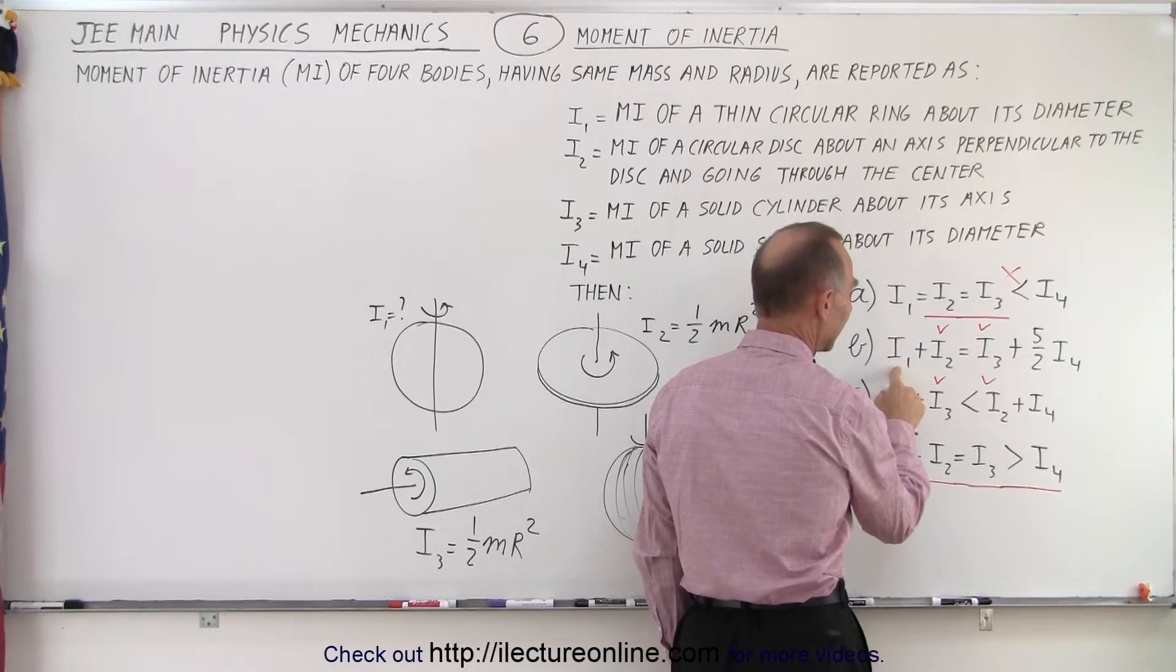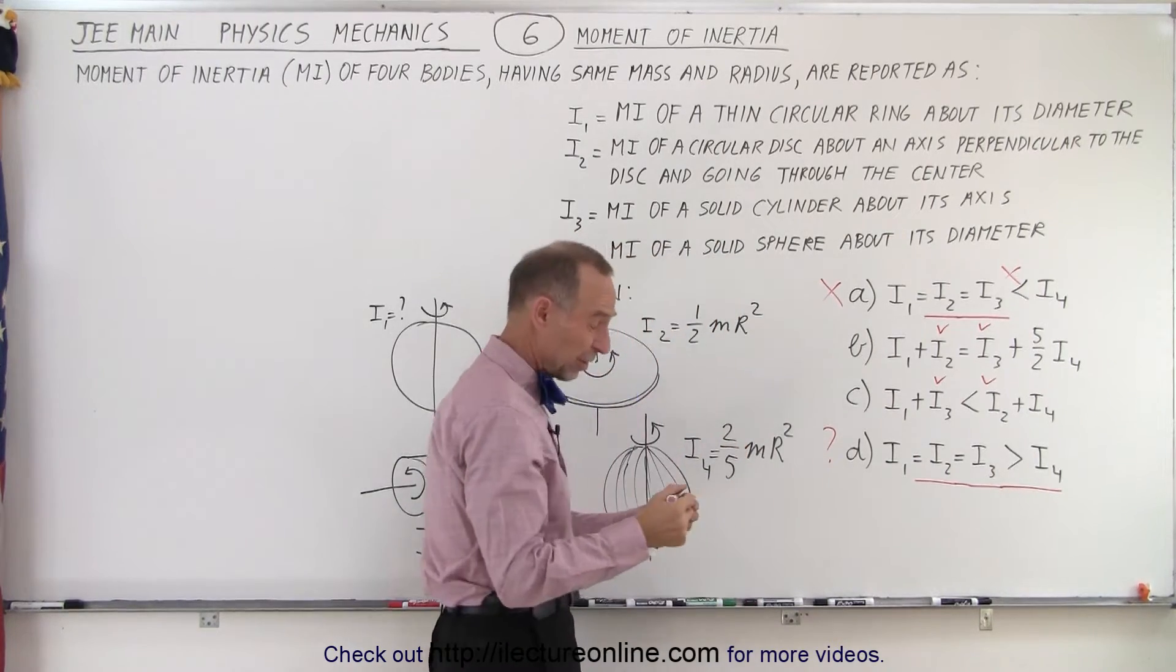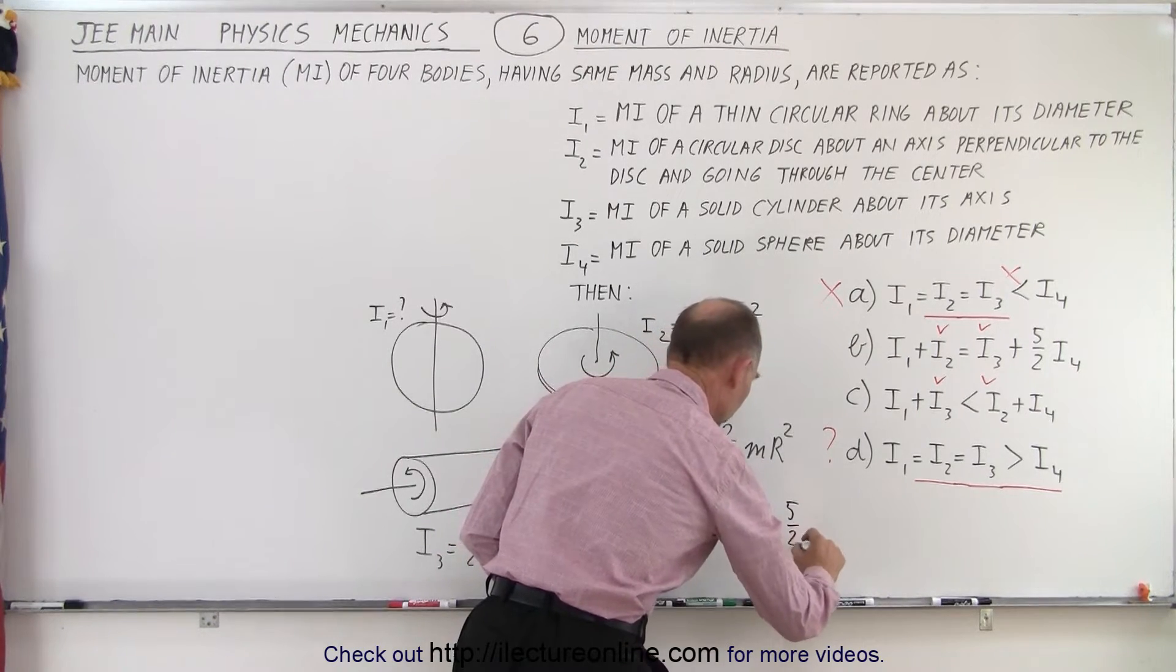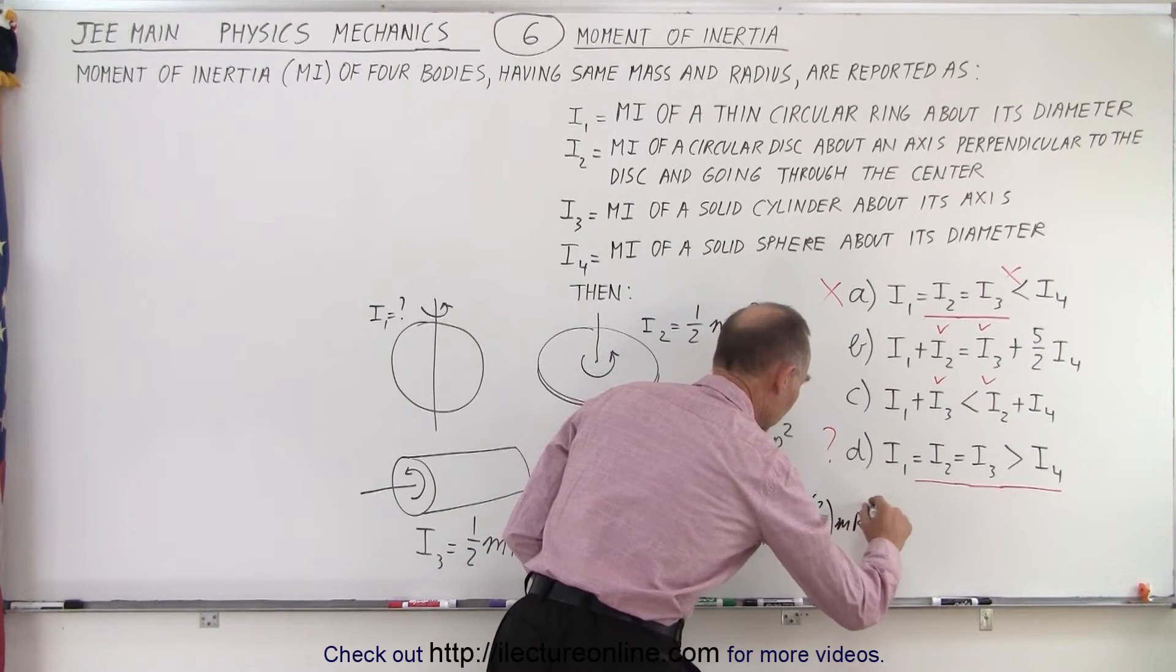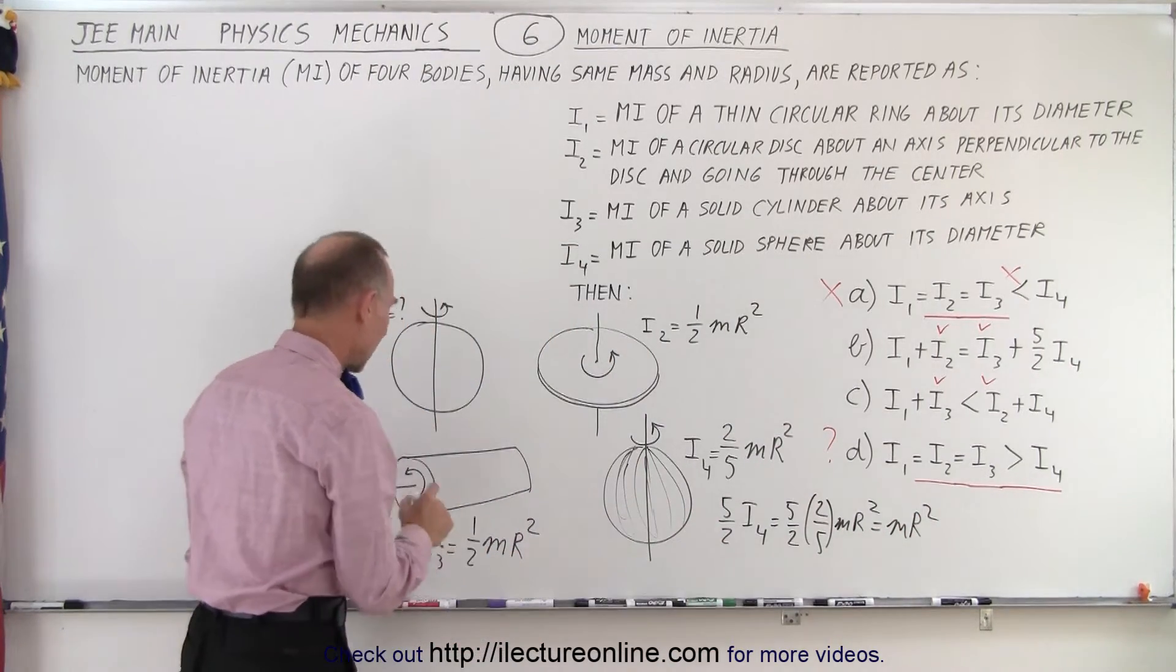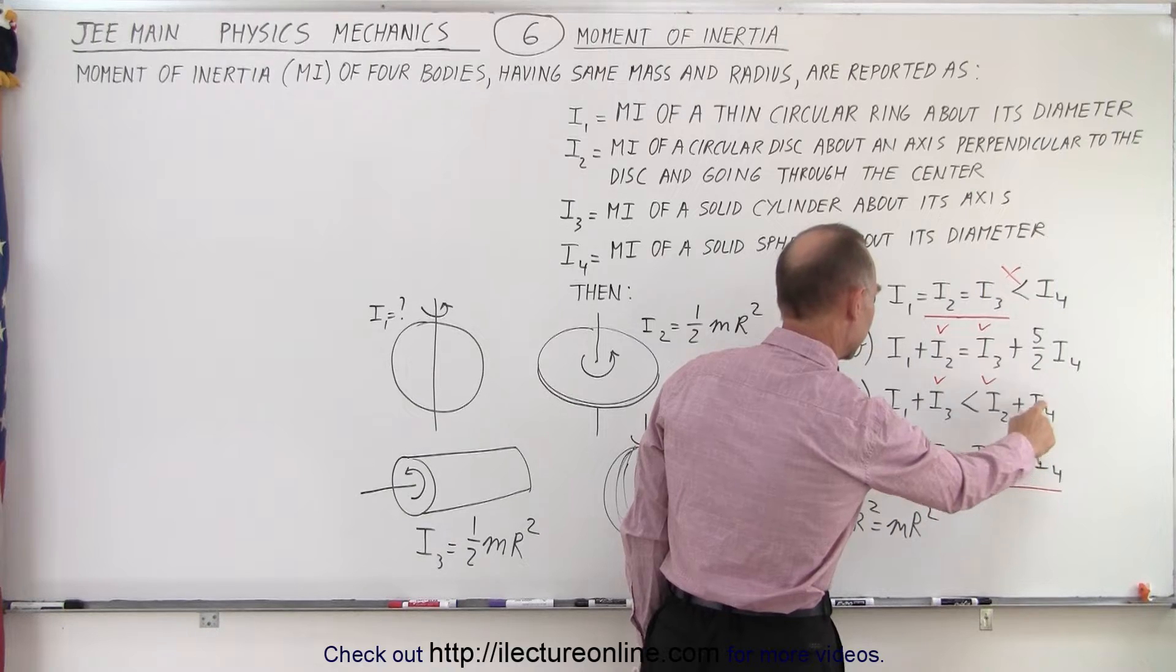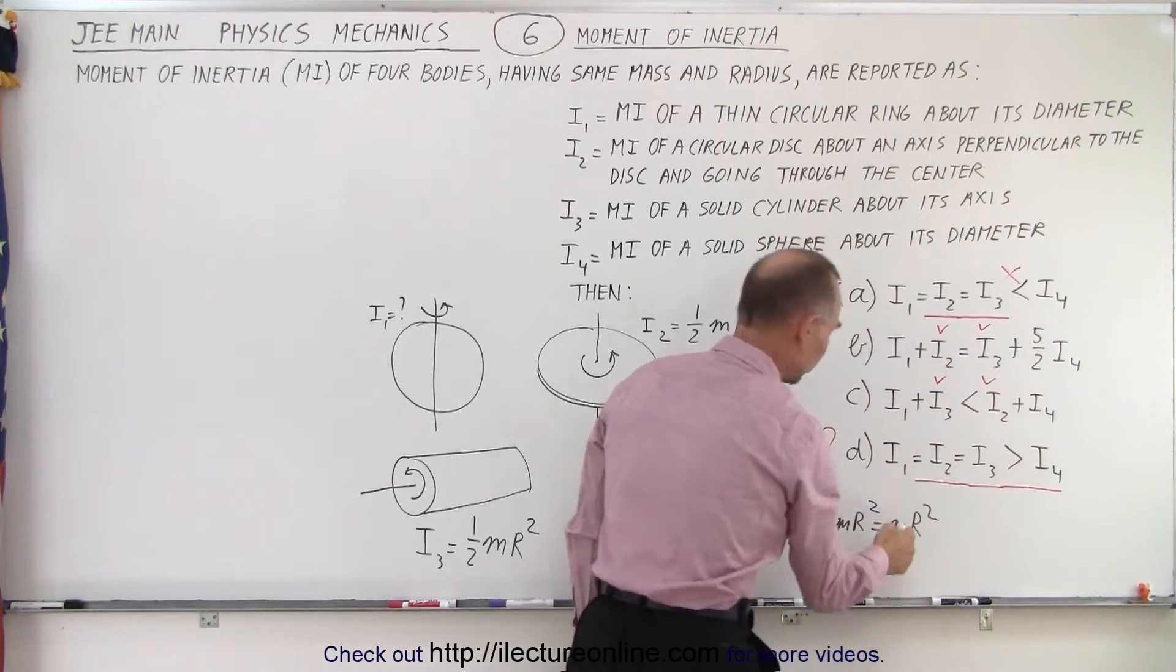Well, 5 halves I4, let's go ahead and do that. So what would be 5 over 2 I4? Well, that would be 5 over 2 times two-fifths MR squared, which is equal to MR squared. And definitely, notice that in this case right here, there's no way that I1 would be equal to MR squared.